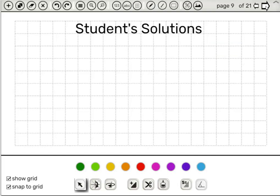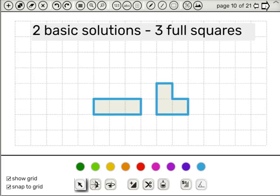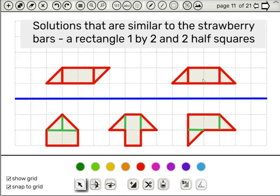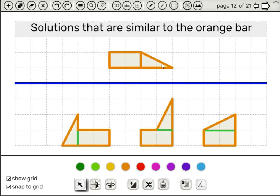Now we'll present different solutions that we saw. We ordered the solutions in what we believe to be an increasing level of creativity. Even so, we believe that every level of creativity is worthy of praise and encouragement. And so here are the basic solutions with 3 squares. And next we have solutions based on the strawberry bars. That is, 1 rectangle of 1 by 2 and 2 triangles with an area of half. And congratulate the students who thought about this idea. And next we have here shapes that are based on the orange bar. A 2 by 1 rectangle and this larger triangle.